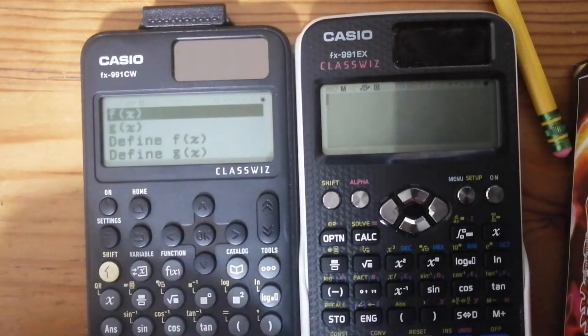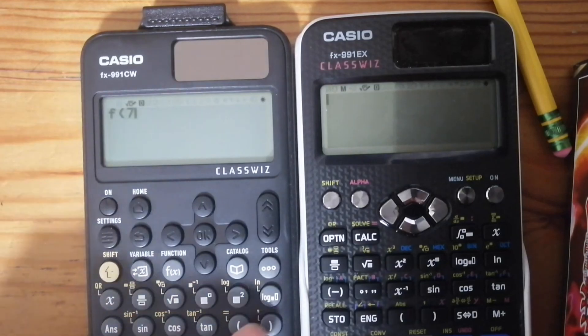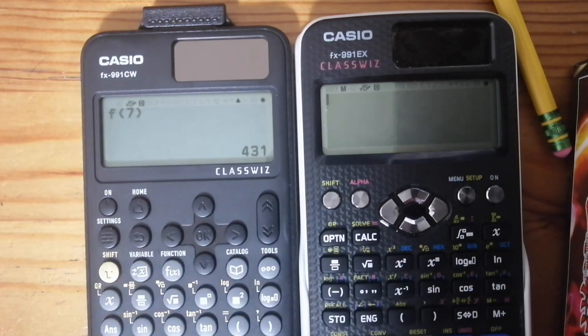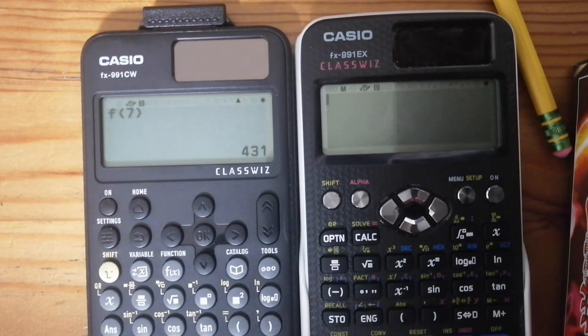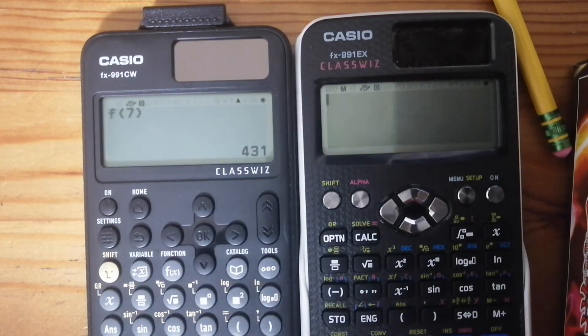find f of x, and then if I want to find like f of 7, let's say, I can do this. And it'll tell me what f of 7 is. So this built-in support for function notation, I think is really cool. It's going to be very helpful in my math classes, especially since they're doing polynomial functions right now.